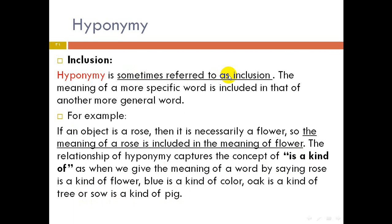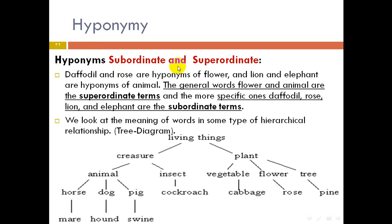In hyponymy we have superordinate and subordinate terms. Daffodil and rose are hyponyms of flower; lion and elephant are hyponyms of animal. The general words flower and animal are superordinate terms; the more specific ones — daffodil, rose, lion, elephant — are subordinate terms. This creates a hierarchical relationship, like a tree diagram: living things → creatures/plants; creatures → animal/insect; animal → horse/dog/pig.